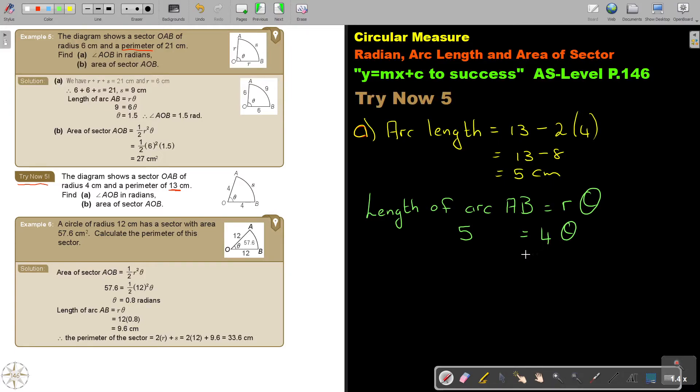And if I divide that, I therefore get that theta equals 1.25, if I divide 5 by 4. So, therefore, angle AOB is equal to 1.25 radians.